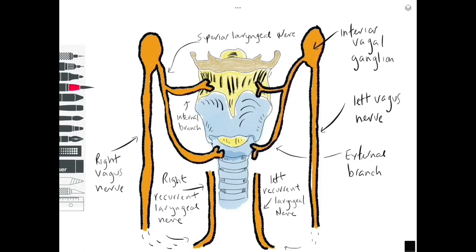So in summary, we have two branches that supply the intrinsic muscles of the larynx: the recurrent laryngeal nerves and the superior laryngeal nerve, which is further divided into an internal branch and an external branch.